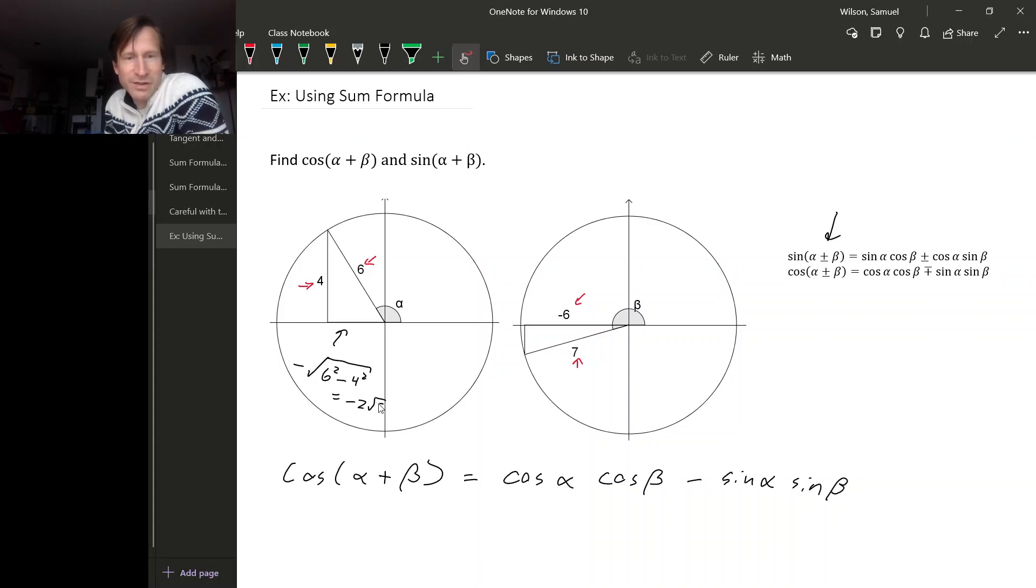So -2√5 for the bottom side here. And then in our diagram for β, this left-hand side is—it's going to be negative because we're in quadrant three—√(7² - (-6)²), so that's √(49 - 36), which is √13, so -√13.